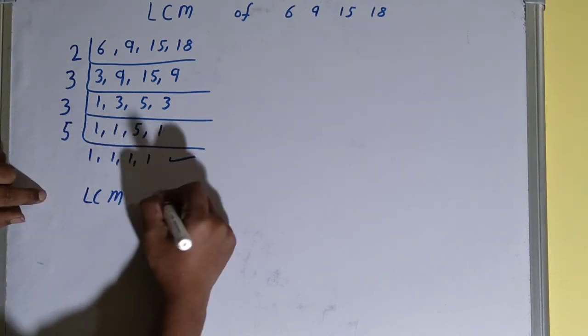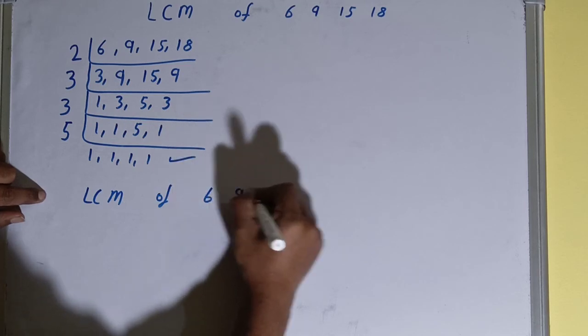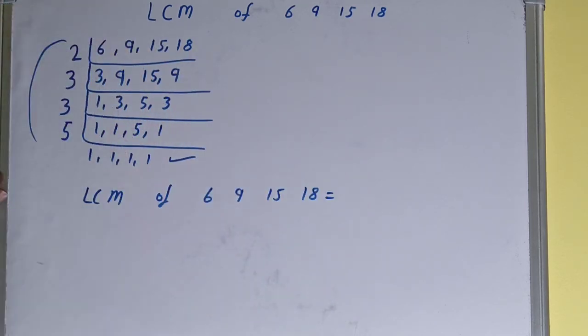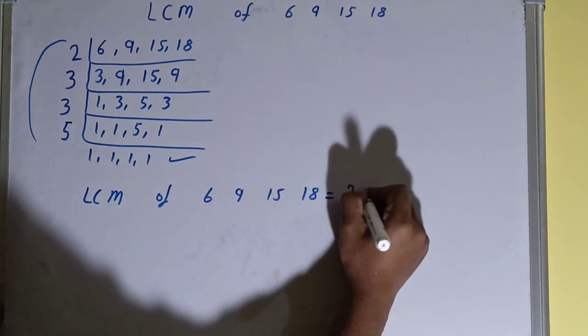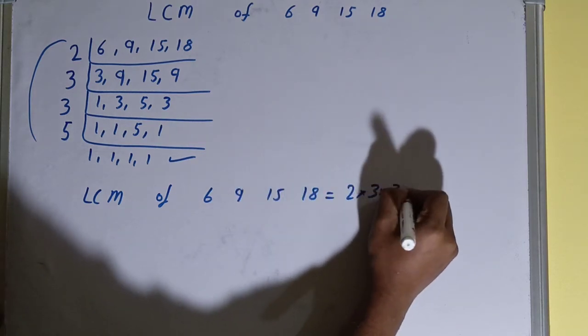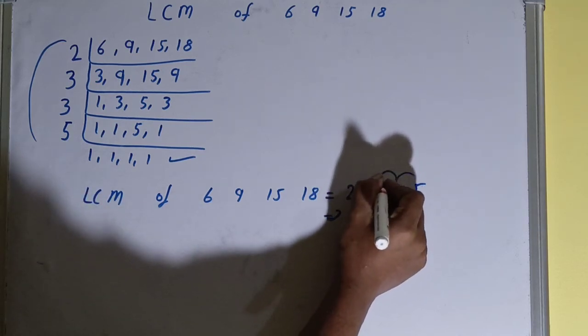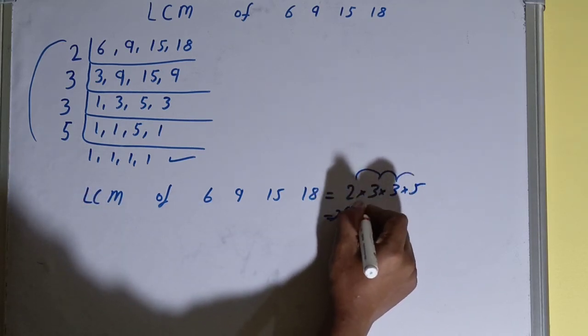That is, LCM of 6, 9, 15, and 18 equals multiplying whatever you have on the left-hand side: that is 2 × 3 × 3 × 5. 2 times 3 is 6, 6 times 3 is 18, 18 times 5 is 90. Your answer will be 90.